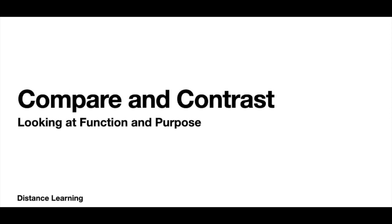Today we're going to be learning how to do a compare and contrast, focusing on the criteria for function and purpose. We're looking at two artists and how we compare their work — what was their reason behind their work, what was their function, the purpose of their piece. Why did they make it? What was it for? Who was the audience? What were they trying to say? These are the things we're going to be discussing as we look at these two pieces.